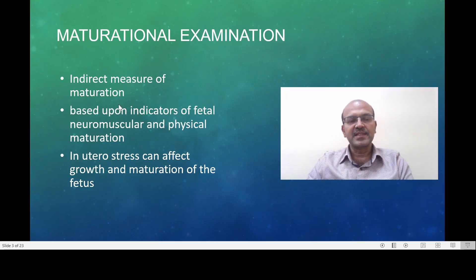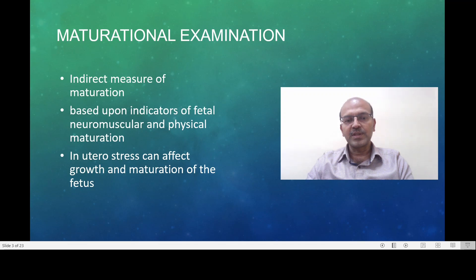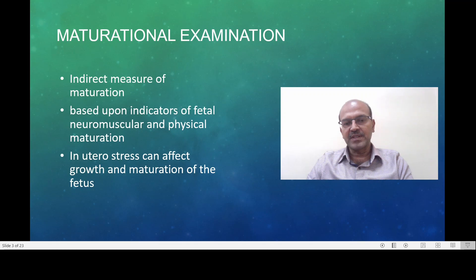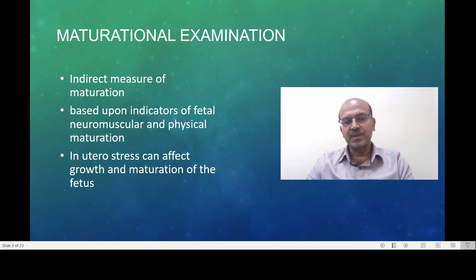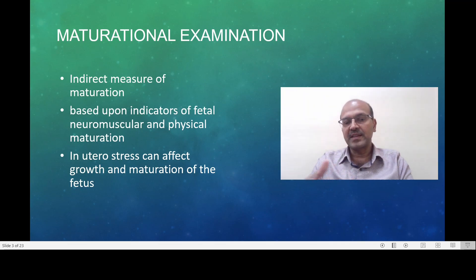The maturation examination is an indirect measure of maturation based on indicators of fetal neuromuscular and physical maturation. In utero stress can affect growth and maturation, and they usually go in opposite directions. For example, a condition causing growth restriction accelerates maturation, while gestational diabetes, which causes the baby to be large, may actually slow down maturation.